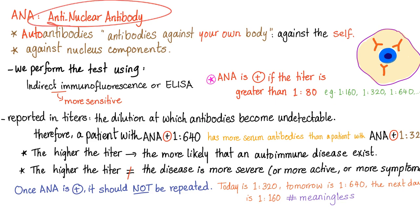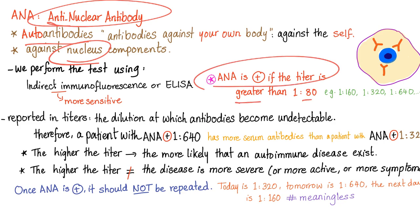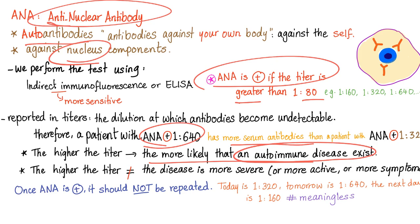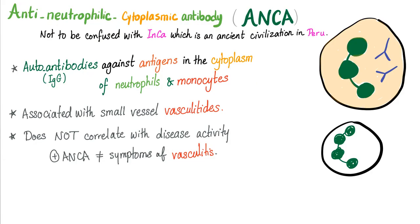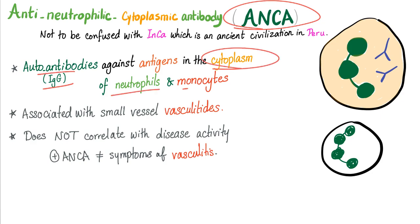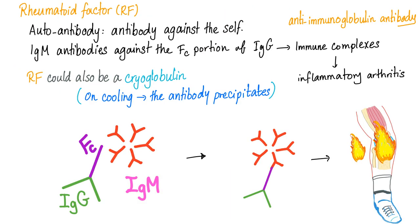Anti-nuclear antibodies are auto-antibodies against your nucleus, positive only if the titer is greater than 1:80. The higher the titer, the more likely you have an autoimmune disease — but a higher titer does NOT mean the disease is more severe. Anti-neutrophilic cytoplasmic antibodies are IgG auto-antibodies against the cytoplasm of neutrophils and monocytes, associated with vasculitides, but they also do not correlate with disease activity. Today's topic is rheumatoid factor — an auto-antibody against the self.